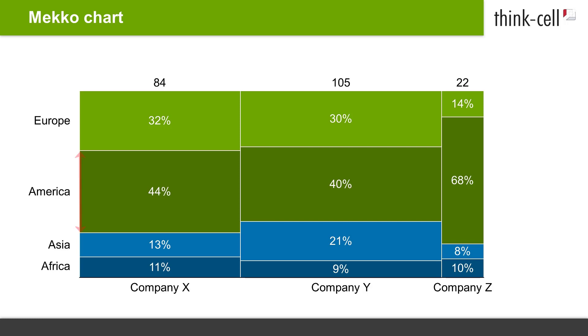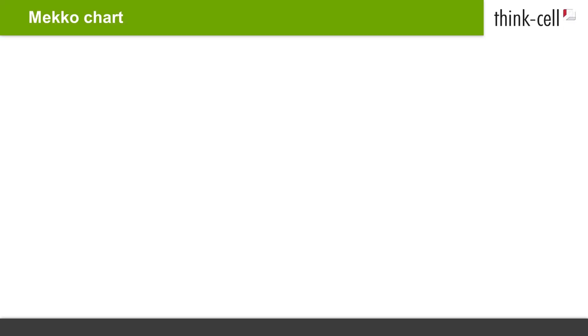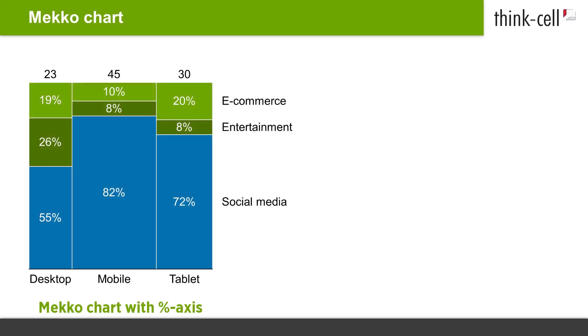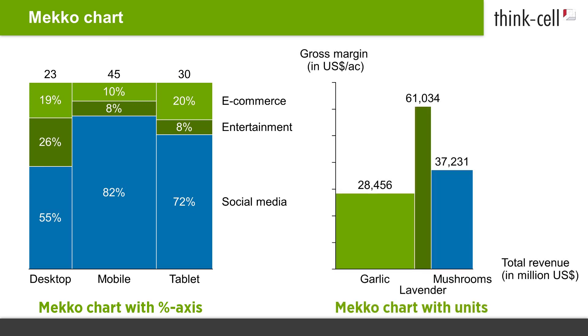In this chart type, not only the height, but also the width of a segment conveys information. ThinkCell offers two types of Mecco charts: Mecco charts with percent axis and Mecco charts with units.